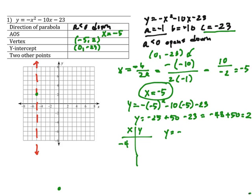So we have y equals negative negative 4 squared minus 10 times negative 4 minus 23. Y equals negative 16 plus 40 minus 23. Y equals negative 38 plus 40, that equals 2. So negative 4, 2.